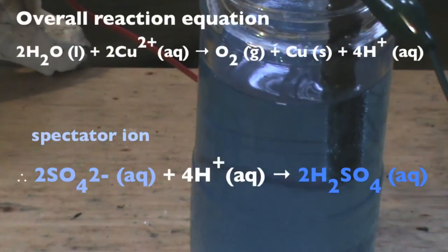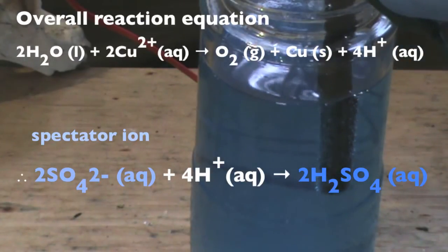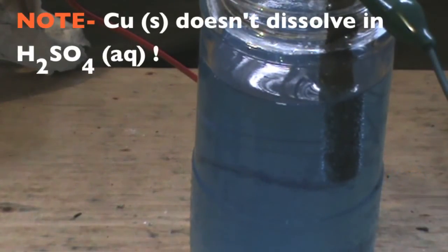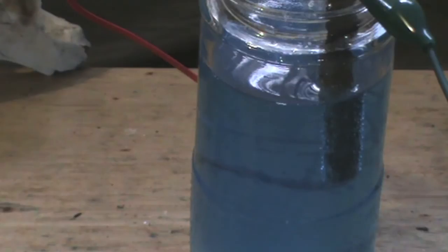The sulfate ions are spectator ions. So the hydronium ions and the sulfate ions join to form an aqueous solution of sulfuric acid. Note that copper metal doesn't dissolve in sulfuric acid, so it is therefore inert.